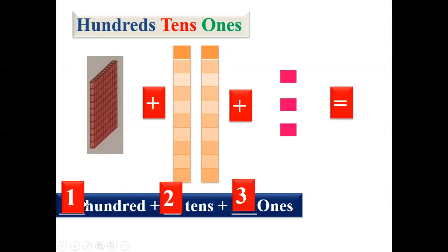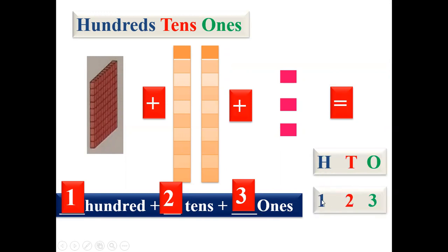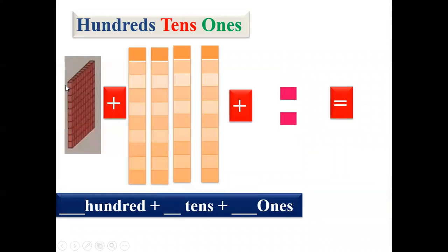So what is the answer? The answer is one hundred, two tens, and three ones. That means the number will be one hundred and twenty-three. So here we'll write one in hundreds, two in tens, and three in ones.